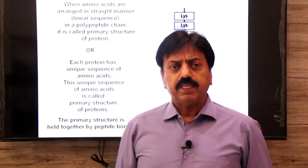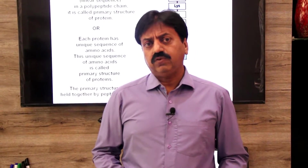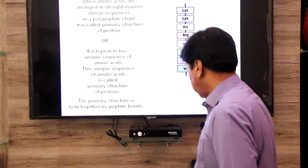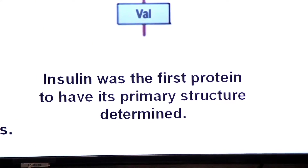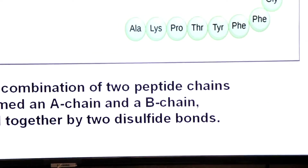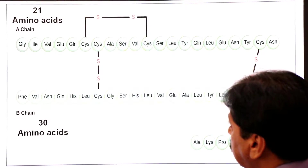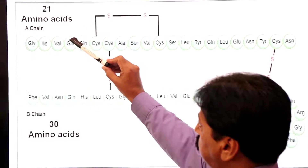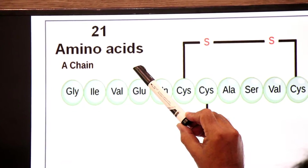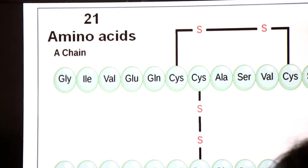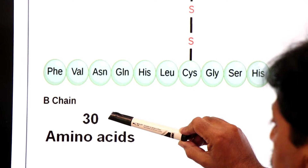The first protein to have its primary structure determined was human insulin. Insulin was the first protein to have its primary structure determined. This diagram shows the structure of human insulin — it is made up of two chains: chain A and chain B. Chain A has 21 amino acids and chain B has 30 amino acids, giving a total of 51 amino acids.